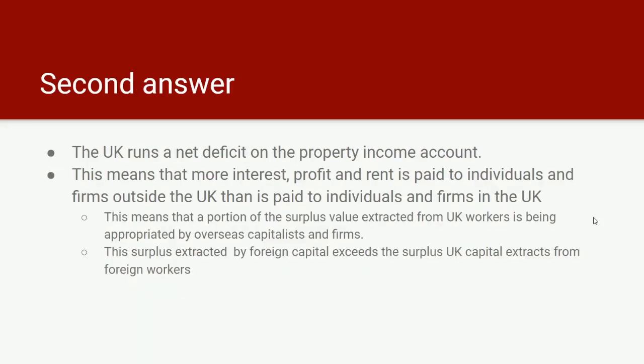There's a more complicated second answer one could give, which is that in fact the UK runs a net deficit on the property income account. This means that the interest, profit and rent paid to individuals and firms outside the UK is greater than that paid to individuals and firms in the UK from outside. So a portion of the surplus value being extracted from UK workers is in fact being appropriated by overseas capitalists and firms — and this surplus extracted by foreign capital exceeds the surplus that UK capital extracts from foreign workers.